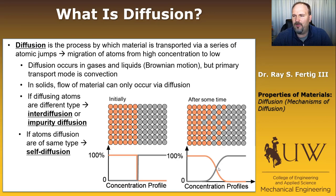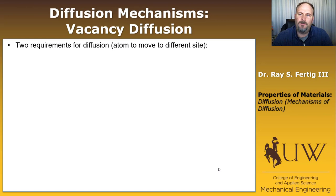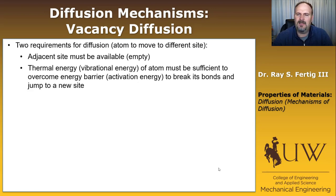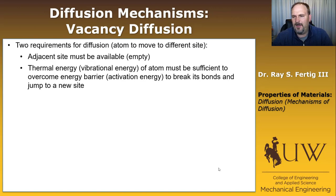Now let's talk about how an atom goes from one position to another. Before discussing vacancy diffusion, we need to ask: what's required for diffusion to happen in the first place? First, whatever site an atom wants to move to has to be available — it needs to be empty. Second, the atom must break its existing bonds, move to the next site, and reform those bonds, requiring an activation energy barrier that must be overcome using the atom's thermal or vibrational energy.